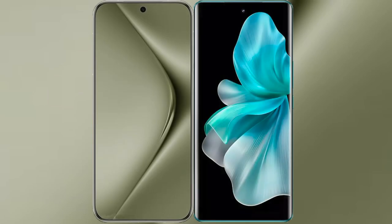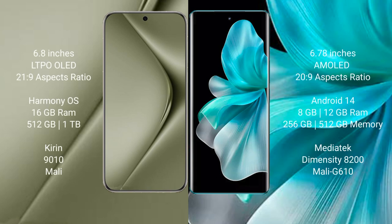I will compare the new Wahabepura 70 Ultra with Vio V30 Pro. Wahabepura 70 Ultra comes with a 6.8-inch LTPO OLED display and Snapdragon 8 Gen processor. Vio V30 Pro comes with a 6.78-inch AMOLED display and a similar processor.